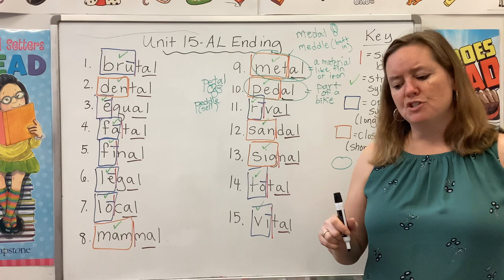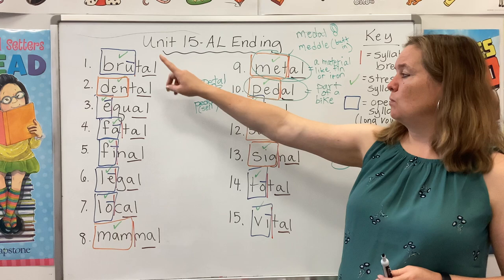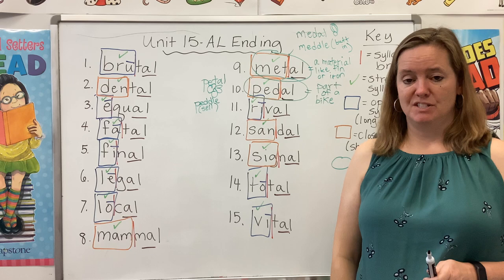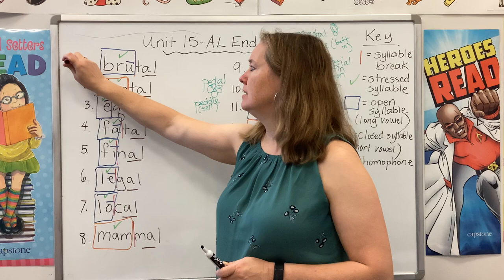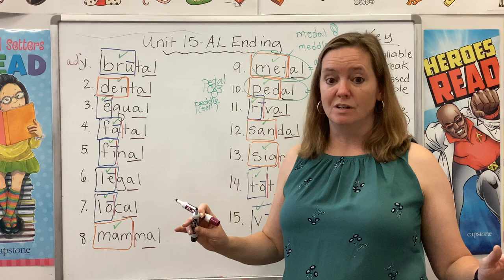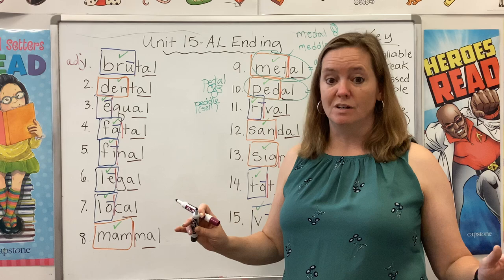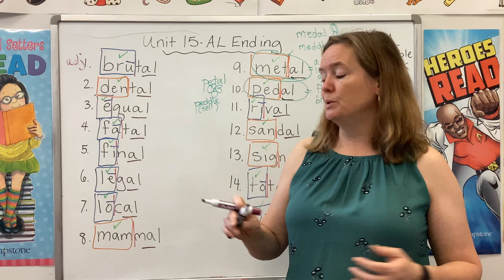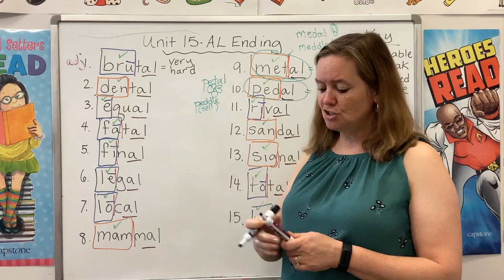One more thing I want to do is talk about the meanings of the different words and put the part of speech next to them. One thing you might notice is that words ending with A-L are usually adjectives — describing words. Brutal is an adjective. If you took a final exam and it was really, really hard, you'd say that was brutal. Or if your car broke down and you had to walk three miles in 100-degree weather, that walk was brutal. So brutal means very hard — hard as in difficult.